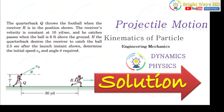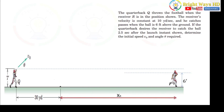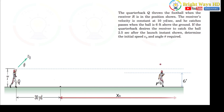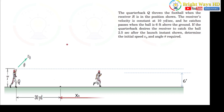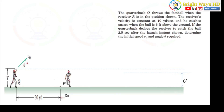Hello guys, today we'll discuss projectile motion with the help of some illustrations. The question states that the quarterback thrown the ball when the receiver's arm is in the position shown. The receiver's velocity is constant at 10 yards per second and he catches the pass when the ball is six feet above the ground. The quarterback desires the receiver to catch the ball 2.5 seconds after the launch — determine the initial speed v-naught and the angle theta.